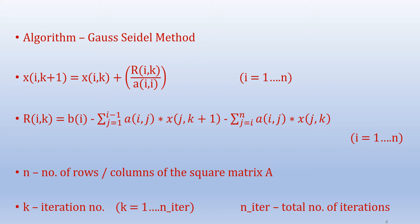Where i varies from 1 to n and R of i comma k equals B of i minus sigma j equals 1 to i minus 1 A of i comma j times X of j comma k plus 1 minus sigma j equals i to n A of i comma j times X of j comma k. Here, i varies from 1 to n.